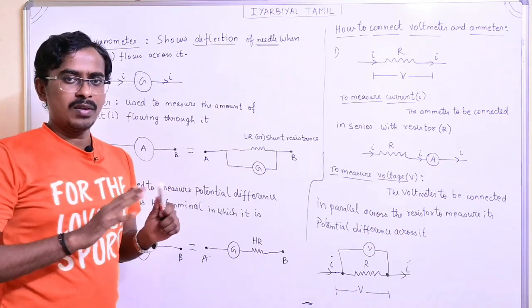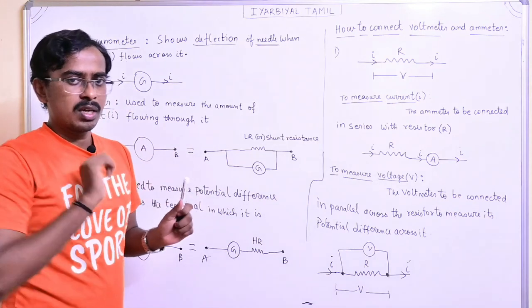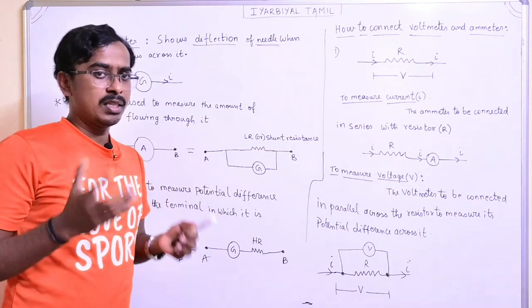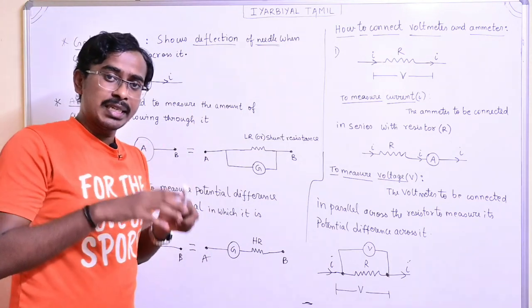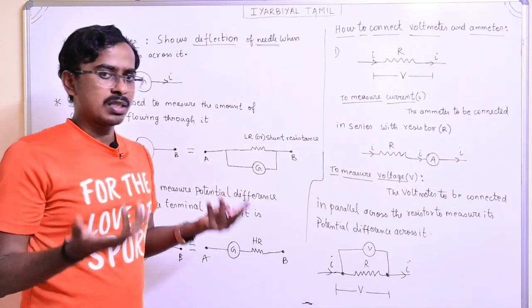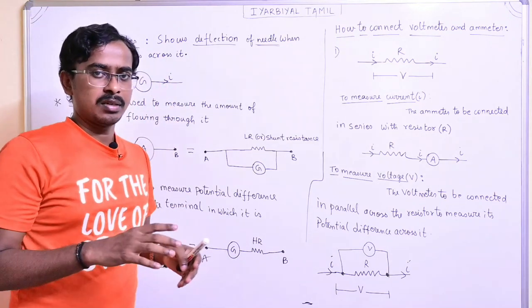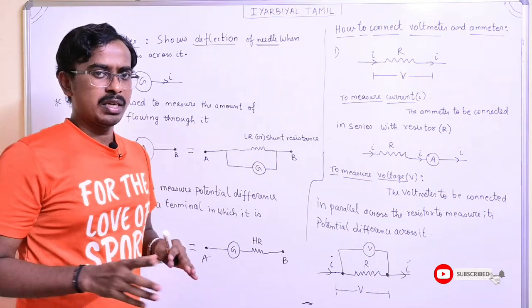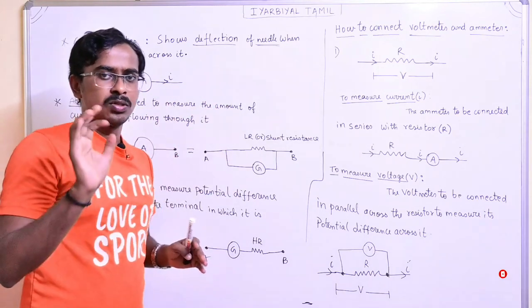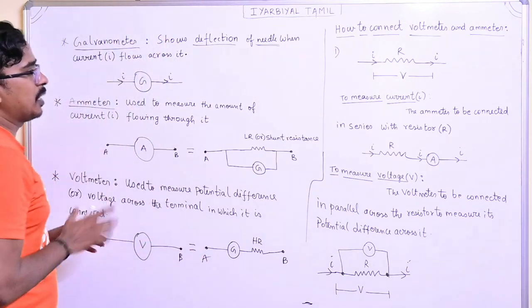Now, if there is no current flow, there is no deflection. This is the galvanometer - it shows deflection. It is used to detect the presence of current. If there is current, there is deflection. It is basically used to find the presence of current. The galvanometer detects the presence of current and will help indicate it.